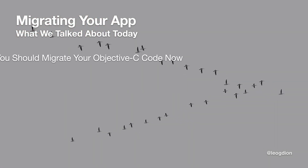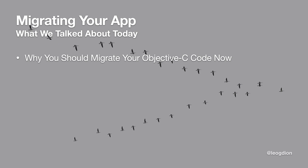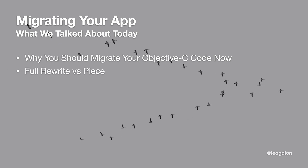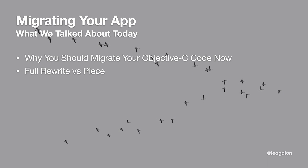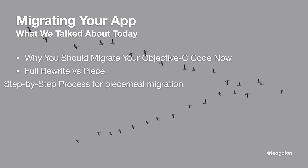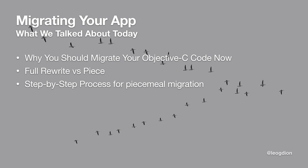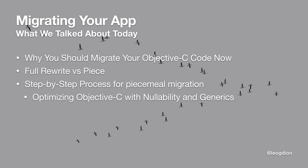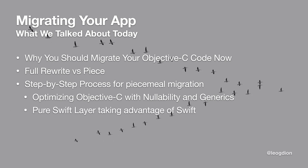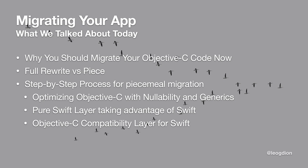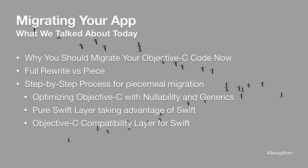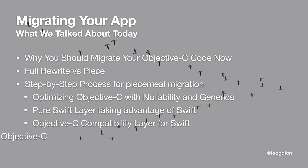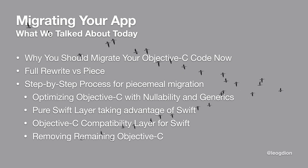So what did we talk about today? Why you should migrate your Objective-C code to Swift now, the different methods — full rewrite or piecemeal — and then the details of that piecemeal approach: optimizing Objective-C code with nullability and generics, writing a pure Swift layer, creating an Objective-C compatibility layer so you can still use Objective-C APIs while taking advantage of Swift, and then removing the compatibility layer and old Objective-C code once you no longer need it.